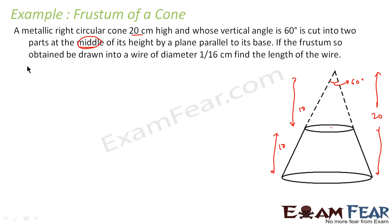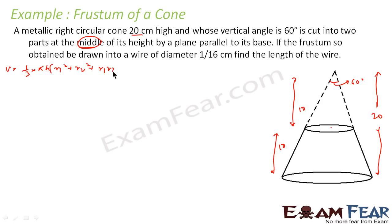The formula for the volume of the frustum is: one-third times pi times h times (r1 squared plus r2 squared plus r1 times r2). Here h is 10 centimeters, which we know.